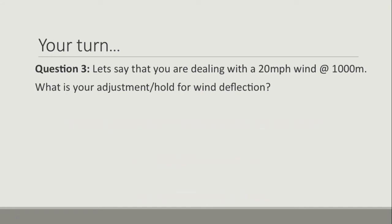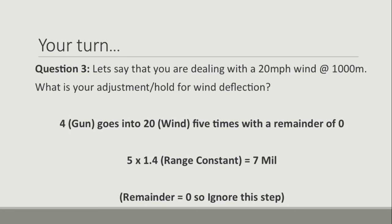Nice work — let's crack on to question three. In this scenario, you're dealing with a 20 mile-per-hour wind at 1000 meters. What is your adjustment or hold for wind deflection? Pause the video, run the formula, then come back and check your answer against mine. Four gun goes into 20 five times with no remainder. Five multiplied by our range constant — which is 1.4 — gives us 7 mils. Because there's no remainder, we ignore that final step. Our firing solution is a 7 mil hold or 7 mil windage adjustment.